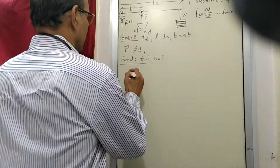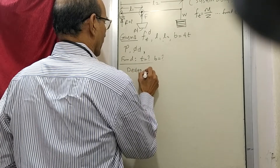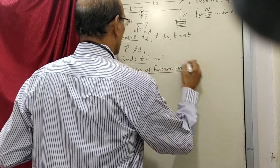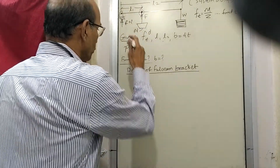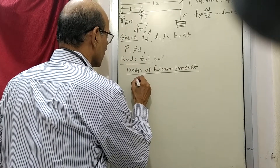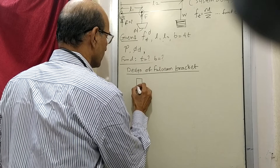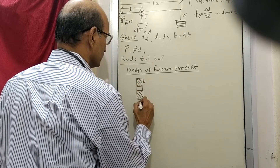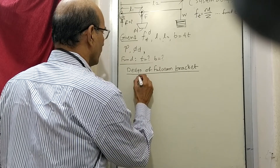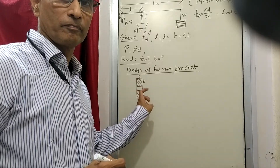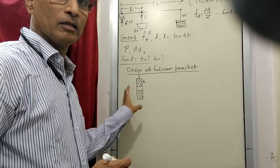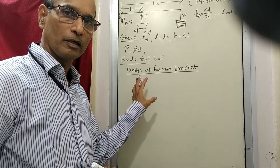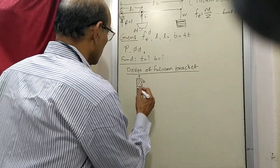The next is design of the fulcrum bracket. Here we bring into picture the lever cross section, which is already decided as b by t. We are continuing with b because we know there is no moment acting here, so there is no question of the section modulus becoming weak because of the pin hole. No problem — we can continue with b.